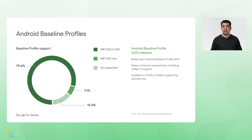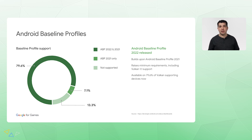Since the last summit, we've released Android baseline profile 2022. This builds upon the 2021 profile and raises requirements further, including Vulkan 1.1 support and useful features such as greater control over render pass creation. It is already available on over 79% of Vulkan-supported devices. You can find more details on the Android baseline profiles and Vulkan support information at the Android distribution dashboards on developer.android.com.